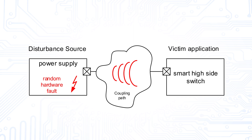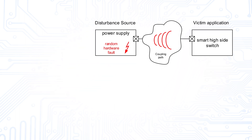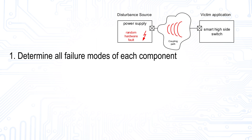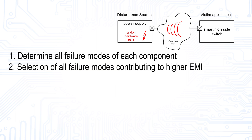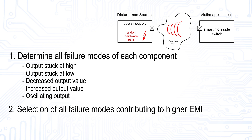Based on an example of a power supply component including a random hardware fault and a smart high-side switch acting as victim to EMI, the probability of faults leading to higher electromagnetic emissions can be calculated as follows. The first step is to characterize all components integrated in an element with respect to their failure modes, reusing the information of the safety analysis of these components. This is followed by the selection of those failure modes which can contribute to higher electromagnetic disturbances. For example, in the power supply there are five fault modes caused by a random hardware fault: output stuck at high value, output stuck at low value, increased output value, decreased output value, and the output is oscillating.